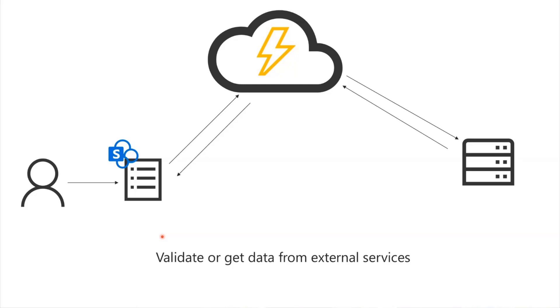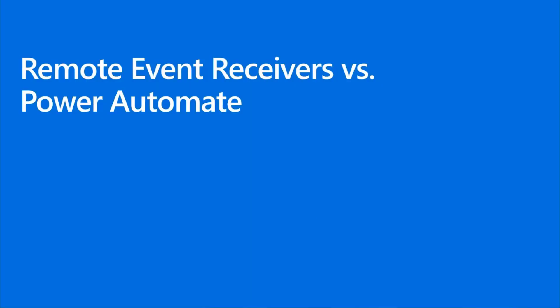A lot of this can actually be done using Power Automate, so when would you want to use remote event receivers instead? Power Automate is always preferred, and using it we can easily handle something changing, running a flow, and writing data back to the list. But one use case where Power Automate really isn't that awesome is say you have six identical lists or 20 because you're using provisioning to roll out these lists — you're suddenly very limited in what you can do in Power Automate.